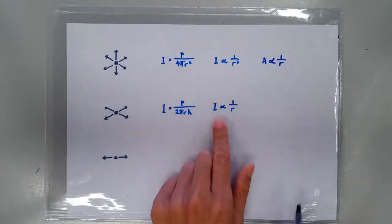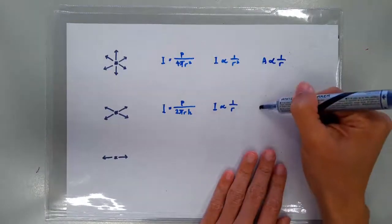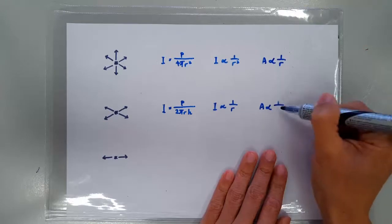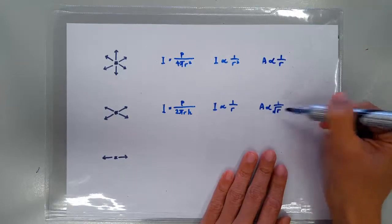And since intensity is proportional to amplitude², the amplitude of a 2D wave source will be proportional to 1 over square root of r.